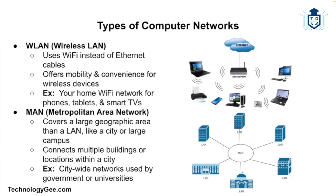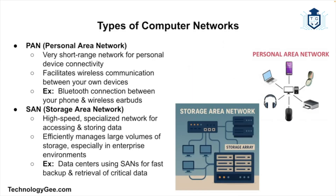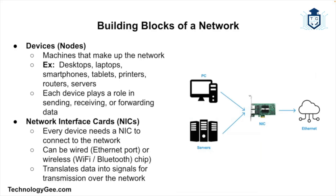A Metropolitan Area Network is used by city governments or large corporations to connect multiple buildings. Then you have a PAN, or Personal Area Network — a small network for personal devices. Think of your Bluetooth connection between your phone and your wireless earbuds. And finally, there's a SAN, or Storage Area Network, which is a specialized high-speed network for data storage. Large organizations use this to store massive amounts of data efficiently.